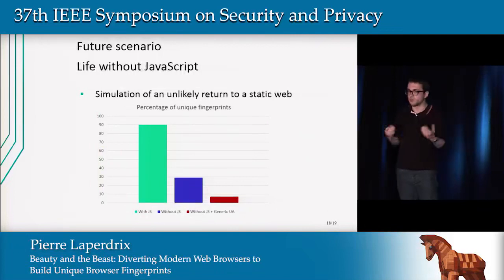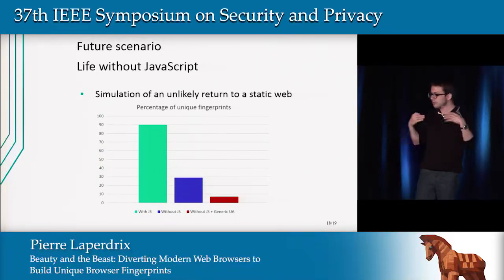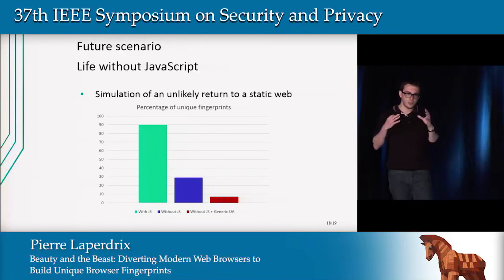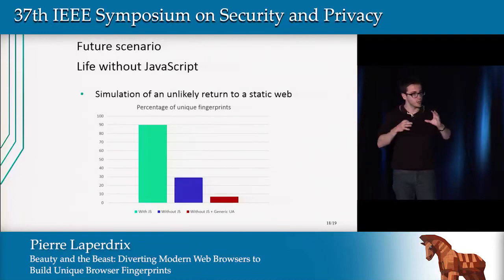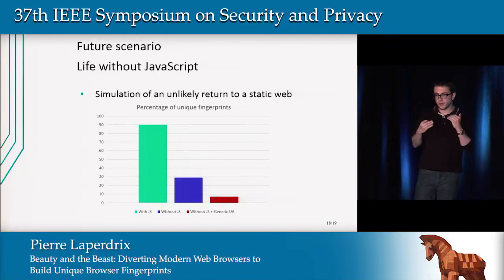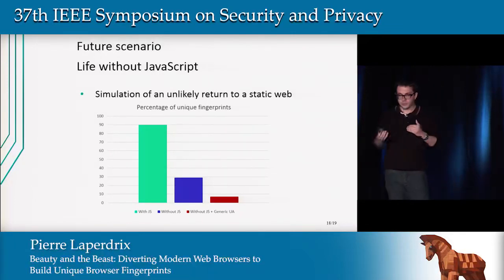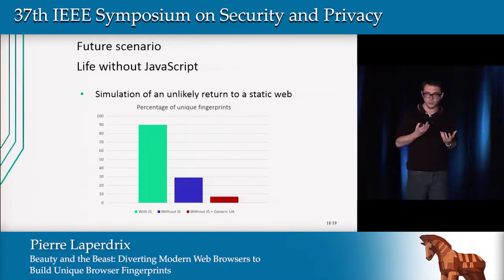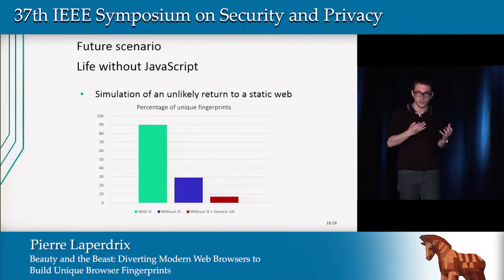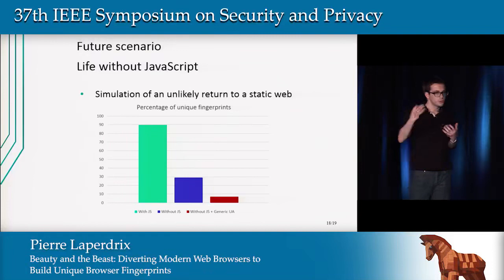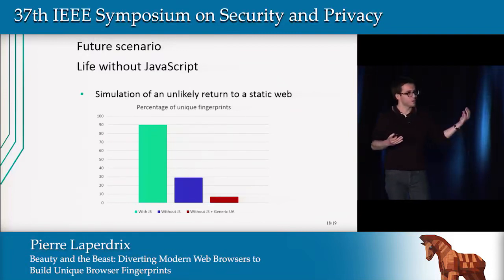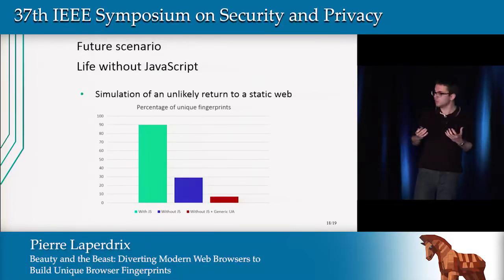Another scenario — much more unlikely — is life without JavaScript. If everyone decided to use something like NoScript, we currently have 90% of fingerprints that are unique with JavaScript. Removing JavaScript and relying only on HTTP headers drops unique fingerprints to less than 30%. Combining that with generic user agents — less precise ones, e.g., just 'mobile on Android 6' instead of a specific Nexus 5X with Android 6.0.1 — drops uniqueness to less than 10%, meaning many more people would share the same user agent.